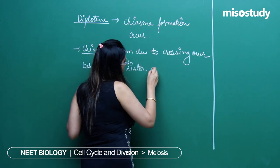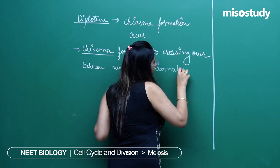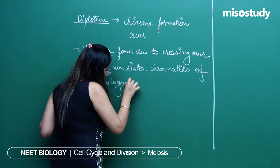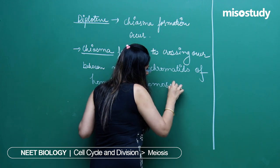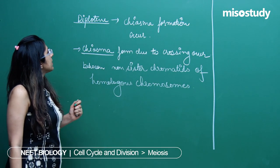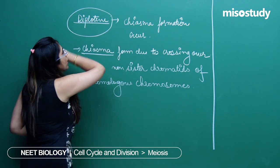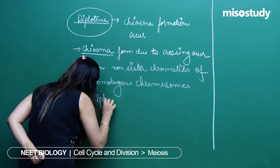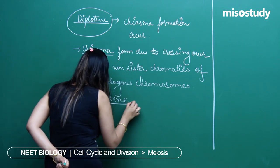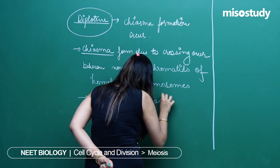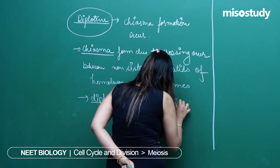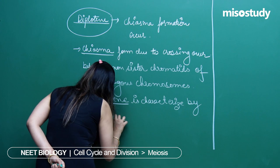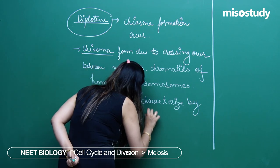Chiasma forms between the non-sister chromatids of homologous chromosomes. This diplotene stage is characterized by dissolution of the synaptonemal complex.